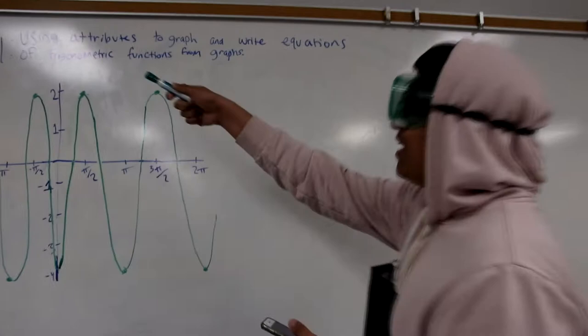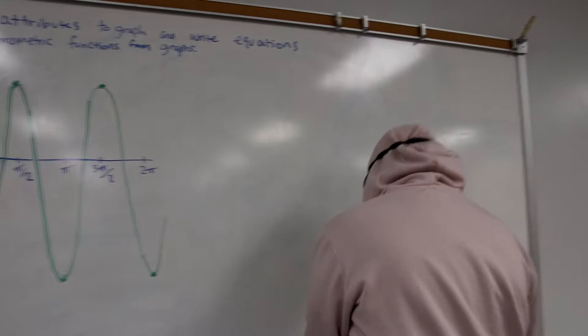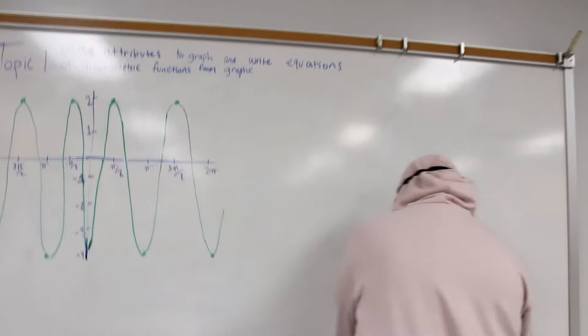So here we have topic one: Using attributes to graph and write equations of trigonometric functions from graphs. So right here, as you can see, we have a graph. I'm going to be explaining some stuff on the fly. That's kind of how I do things. So yeah, here's pretty much the equation we're going to be using. Sorry, that Y counts weird, but I'm going to try and do my best.